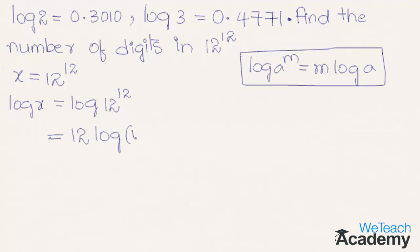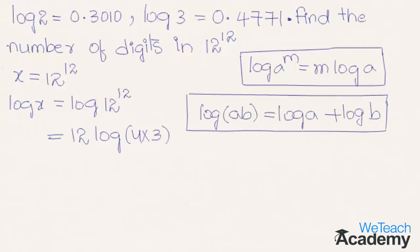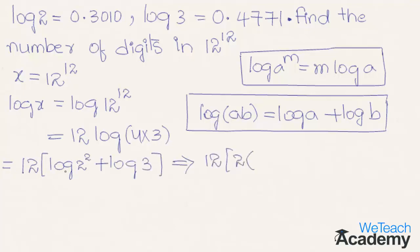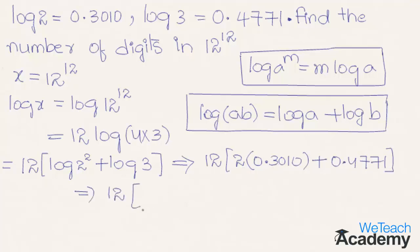Here log 12 is nothing but log of 4 into 3. It is in the form of log ab equal to log a plus log b. Using the product rule we write 12 into log 4 plus log 3, where log 4 is log 2 squared. That gives us 12 into 2 log 2 plus log 3, which is 12 into 2 times 0.3010 plus 0.4771.